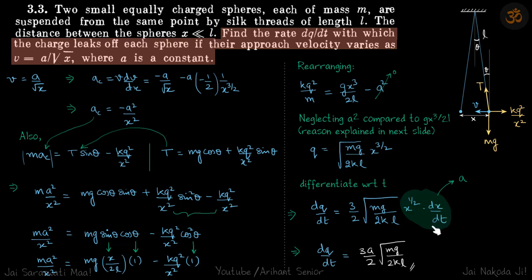dx by dt is a by root x. So x root x into a by root x becomes a which gives our answer dq by dt is equal to 3a by 2 root of mg by 2kl.